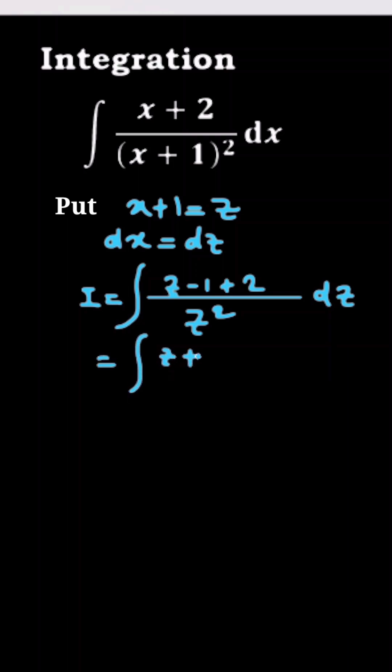z plus 1 by z square dz, which is equal to integration of 1 by z dz plus integration of z to the power minus 2 dz.